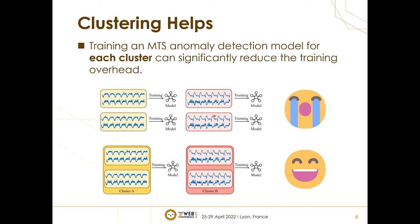System instance clustering can help us solve this problem. It is intuitive to group system instances into different clusters such that the system instances in each cluster have similar normal patterns. Thus, we can train an MTS anomaly detection model for each cluster instead of each system instance, significantly reducing the training overhead, since ideally the number of clusters is much smaller than the number of system instances.